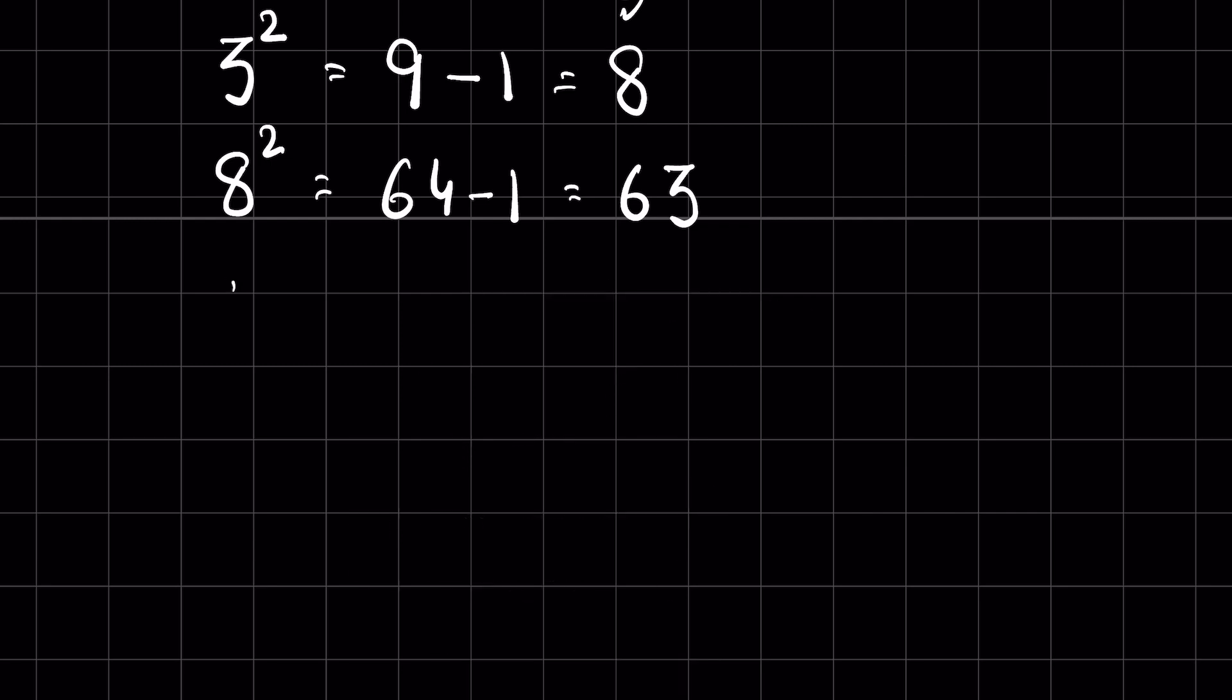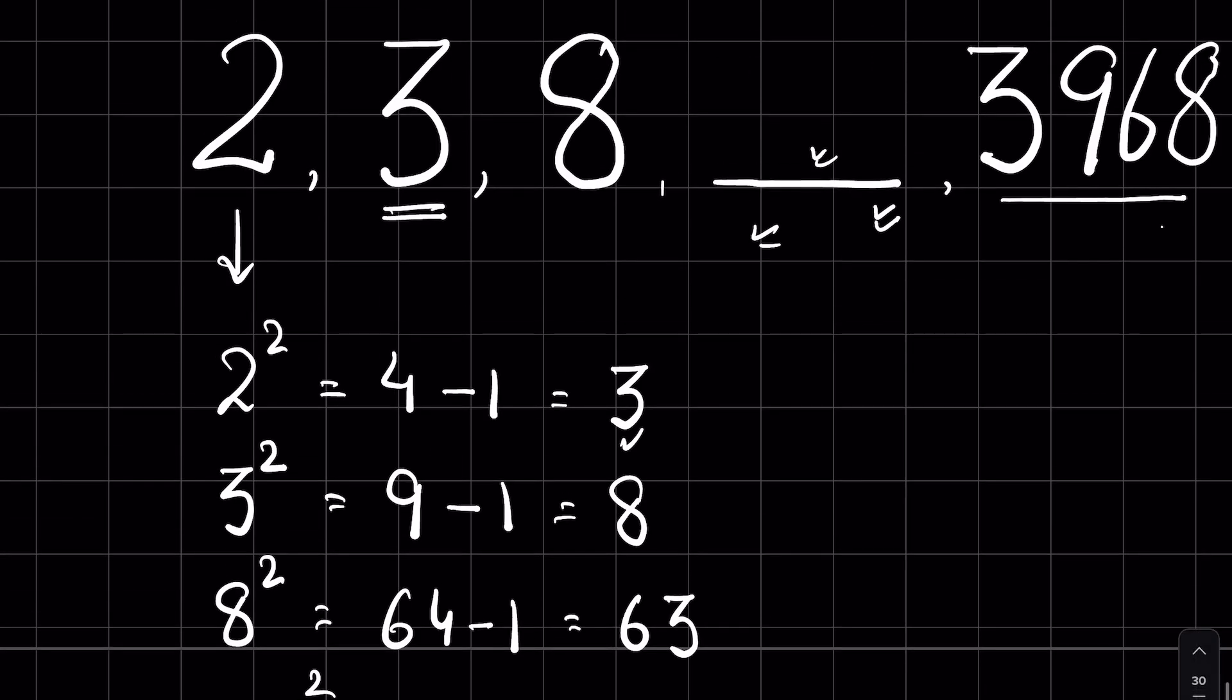That means here it will be 63 squared equals 3969, minus 1. So the last number should be 3968, and that is what our last number is. That means 63 is the correct answer.